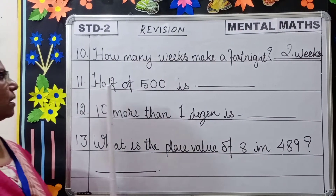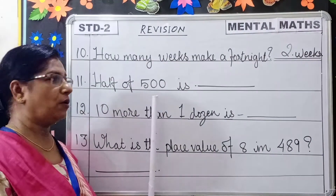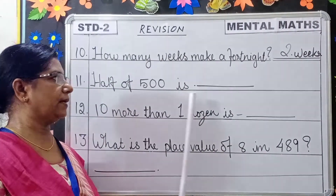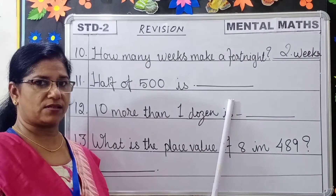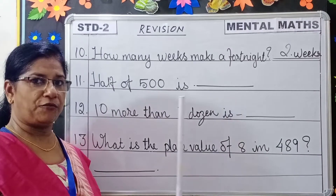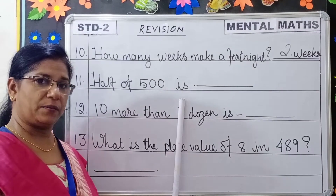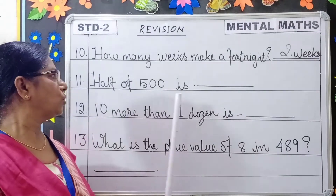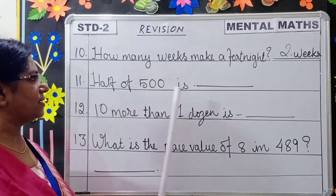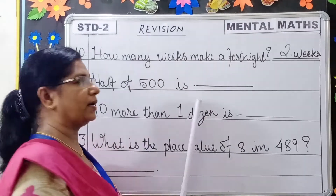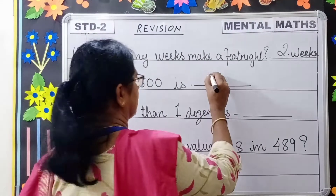Next question: Half of 500 is dash. Half means any number divided by 2. So the answer is 250.